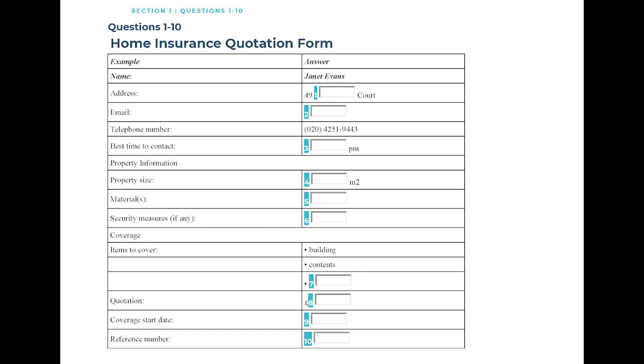Before you hear the rest of the conversation, you have some time to look at questions 7 to 10. Now, I'll go through a number of things we offer coverage for, and I'd like you to tell me which items you want on your policy. OK. We'll start with the building itself first. Would you like us to cover incidental damage to the structure of your house? Absolutely. Splendid.